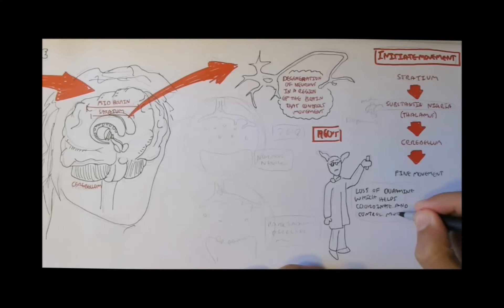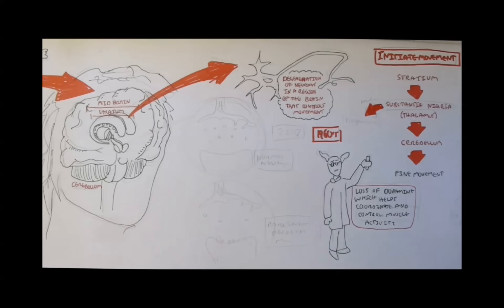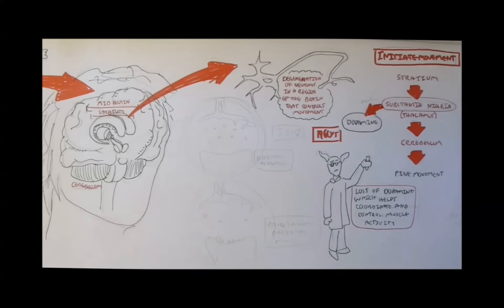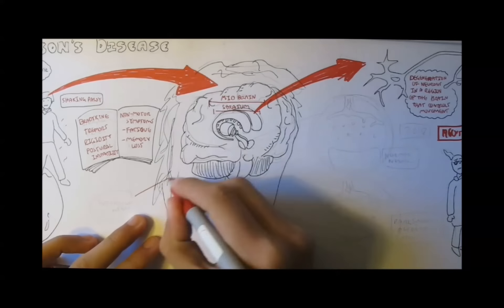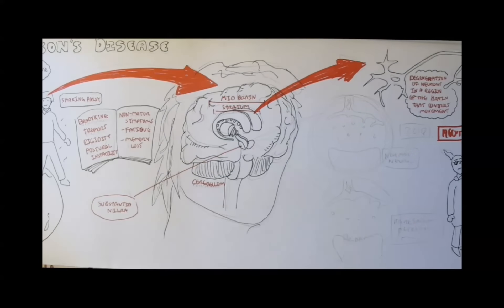Dopamine helps to coordinate and control muscle activity. The loss of these neurons producing dopamine are actually primarily in the substantia nigra.